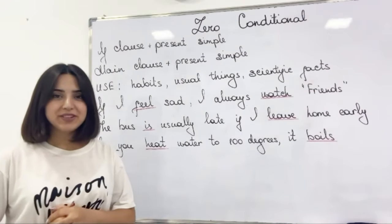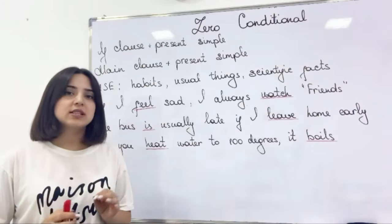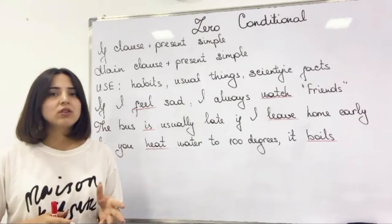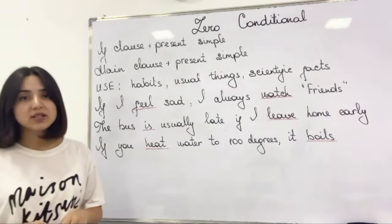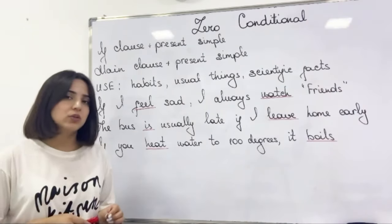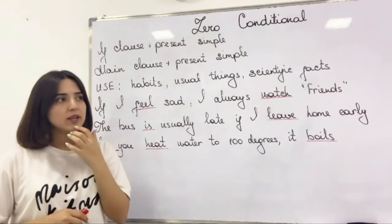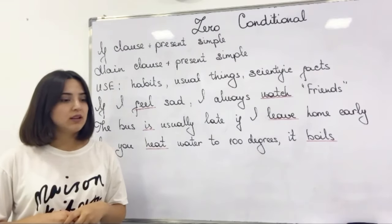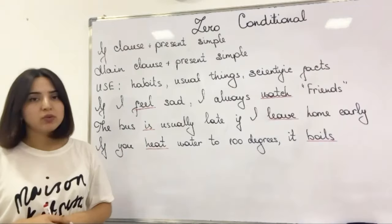Okay, let's start to speak about zero conditional. I want to say that all conditional sentences consist of two parts: the if clause and main clause. The if clause is also called the conditional clause. In zero conditional, we use present simple tense form in the if clause and present simple tense form in the main clause as well. We usually use zero conditional if we want to speak about our habits, something that usually happens to us in our daily life, or about scientific facts. I have written three simple sentences for you.